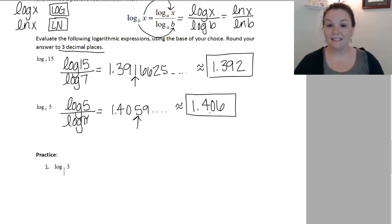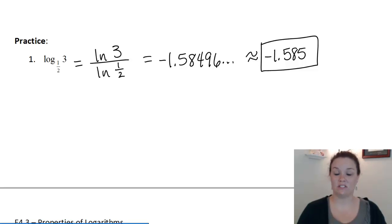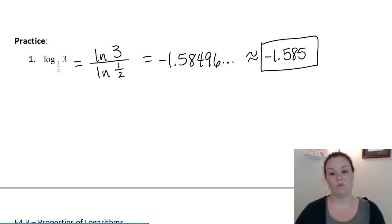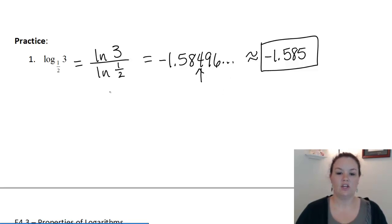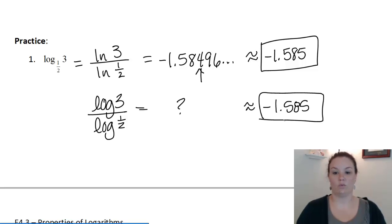There's one practice problem for you to try — instead of using log, try to do it with ln. When you change log base 1 half of 3 to an ln, you do ln of the inside number, which is 3, divided by ln of the original base, which is 1 half. Doing ln of 3 divided by ln of 1 half gives negative 1.584... Round to three decimal places: my third decimal place was 4 with a 9 behind it, so it rounds up. You get the same thing if you did log of 3 divided by log of 1 half — whether you use ln or log, you get the same answer.